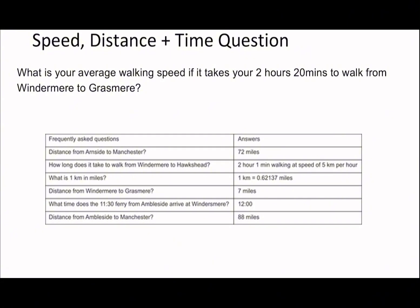These questions look more challenging than they are – just keep the formula in mind. Next question: What's your average walking speed if it takes 2 hours and 20 minutes to walk from Windermere to Grassmere? That's 7 miles in 2.33 hours. Seven divided by 2.33 equals 3 miles per hour. To convert to kilometers per hour, multiply by 1.6, giving 4.8 kilometers per hour.